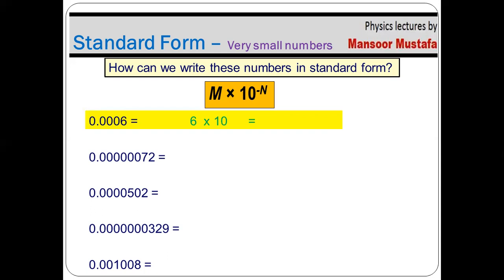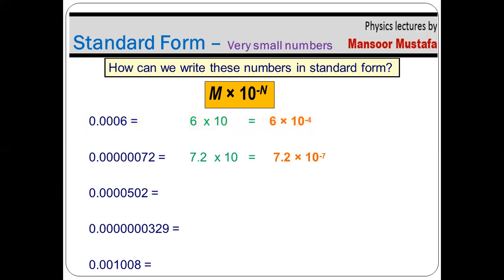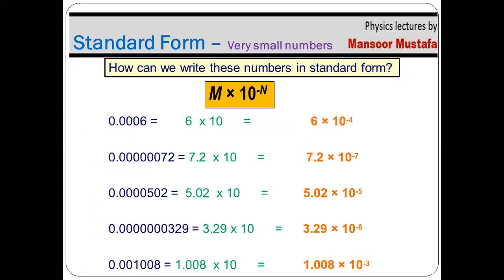Next, put the power of 10 based on how many positions the decimal has moved. In this case the decimal moved 4 digits to the right, so its power will be minus 4. Remember: when converting a smaller number less than 1, its power is negative. For the next number, converting it into standard form gives 7.2 × 10^−7. For the rest of the numbers, solve them the same way as before. The results are shown here.